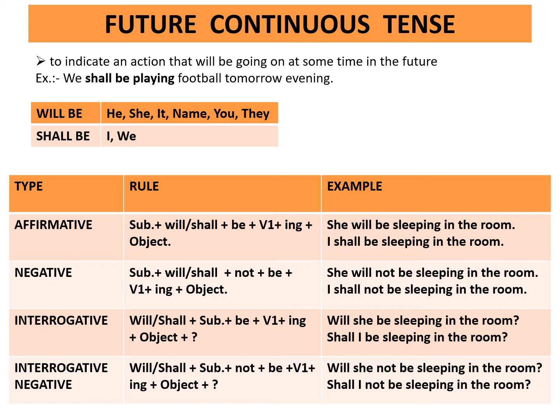Interrogative rule: will or shall plus subject plus be plus first form of the verb plus ing plus object plus question mark. Example: Will she be sleeping in the room? Shall I be sleeping in the room? Interrogative negative rule: will or shall plus subject plus not plus be plus first form of the verb plus ing plus object plus question mark. Example: Will she not be sleeping in the room? Shall I not be sleeping in the room?